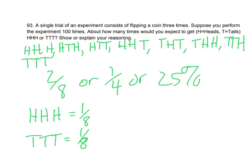All right. So a single trial of an experiment consists of flipping a coin three times. Suppose you perform this experiment 100 times, about how many times would you expect to get three heads, three tails? Show your reasoning. Well, so what I did here was I just listed, if I flip a coin three times, what are my possible outcomes? So I've got heads, heads, heads, heads, tails, heads, heads, tails, tails, et cetera. You can read all my stuff.